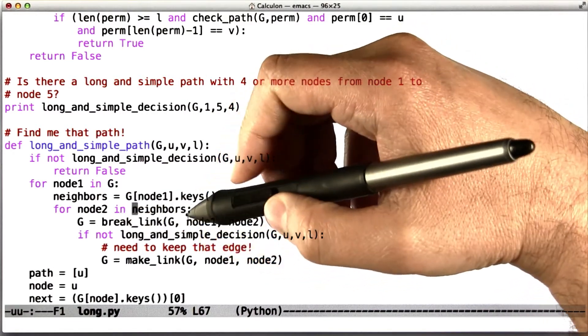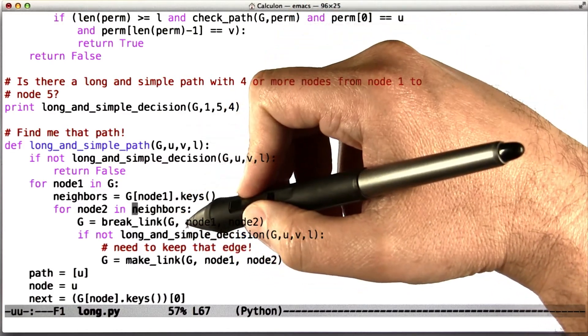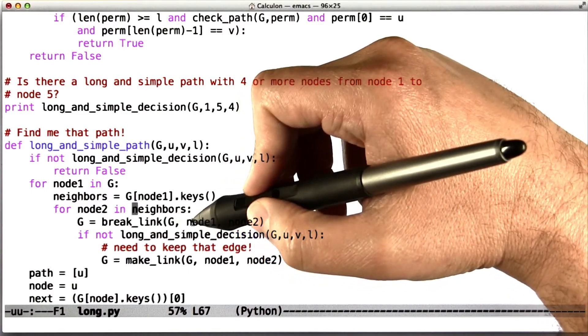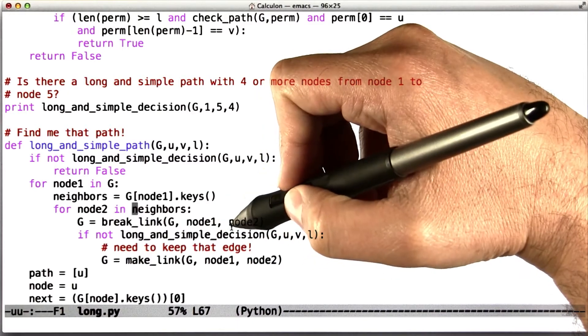I probably should have mentioned that earlier, but there is actually a break_link piece of code in the skeleton that I gave you. So in graph G, get rid of the edge from node1 to node2. We can do that in constant time.